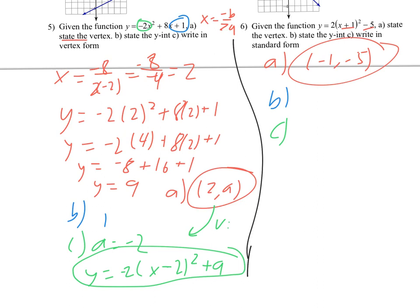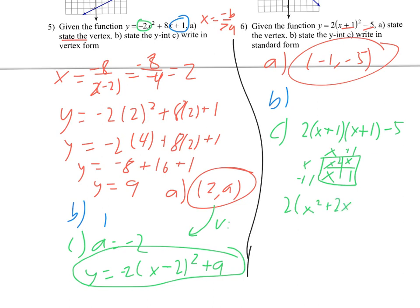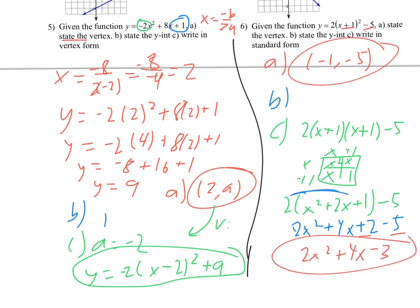So to switch it to standard form, I'm going to write x plus 1 twice since it's squared, and multiply those together with a box — x plus 1 times x plus 1. This gives me x squared, then x and x, and then 1. So I get 2 times x squared plus 2x plus 1 minus 5. I'll distribute the 2 in there: 2x squared plus 4x plus 2 minus 5. And combining like terms gives me 2x squared plus 4x minus 3. That is it in standard form. And once I have that, I can see that the c value is my answer to part B, which will be negative 3.